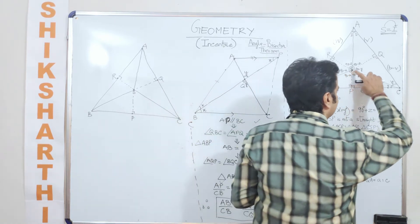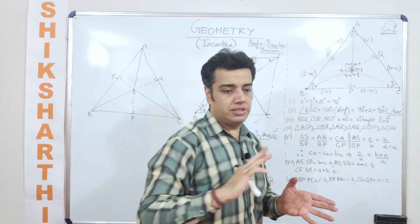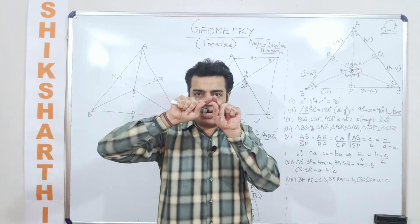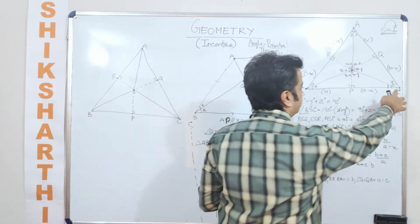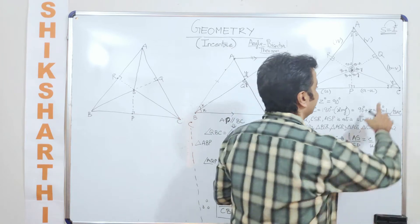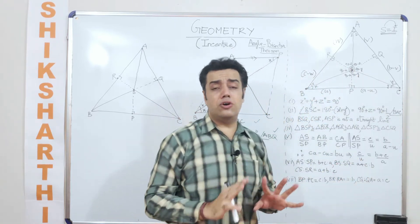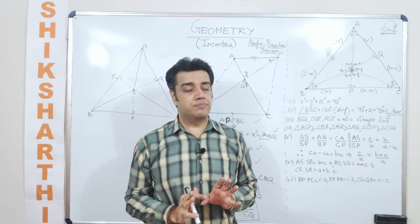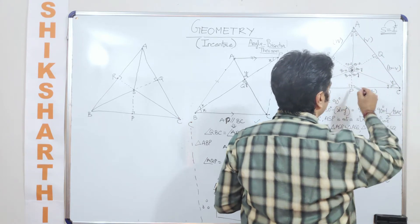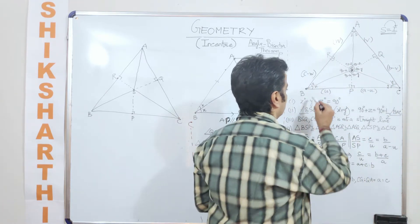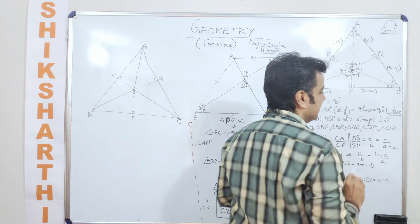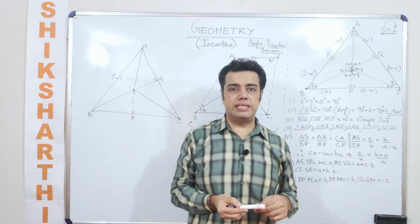In the first video, we had extended the lines such that all three points were collinear. Here, points C, S, R are not collinear; points B, S, Q are not collinear; and points A, S, P are not collinear. Now, if I take this angle as angle X, angle Y, and angle Z, the first thing we can establish is that the sum of all interior angles of a triangle equals 180 degrees.